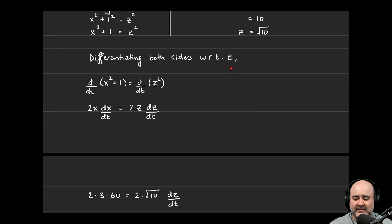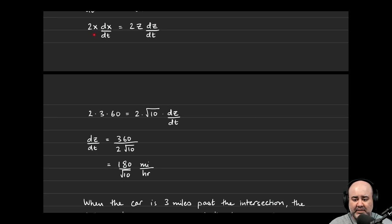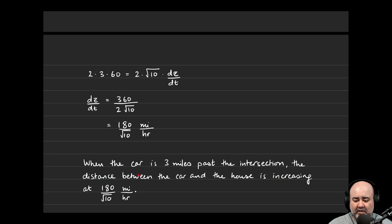If we differentiate both sides with respect to time, the derivative of x² is 2x dx/dt. The derivative of 1 is zero. The derivative of z² is 2z dz/dt. Now we plug in: 2 times x (which is 3, because we're three miles past the intersection) times dx/dt (60 miles per hour) equals 2 times z (which is √10) times dz/dt. Dividing 2√10 to the other side isolates dz/dt, giving us 180 over √10 miles per hour. The distance is increasing since this rate is positive.